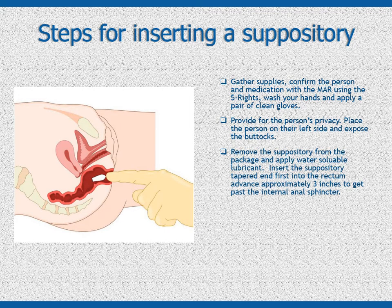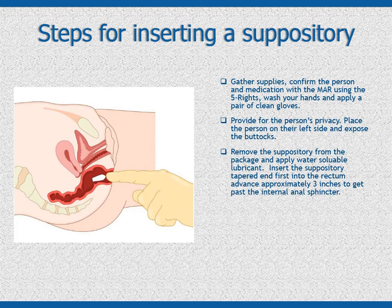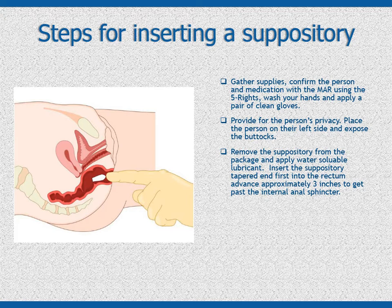Remove the suppository from its wrapper and apply a liberal amount of water-soluble lubricant to the tapered end. Using your non-dominant hand, lift the person's upper buttock to expose the anus. Have the person take several deep breaths and gently bear down like they are having a bowel movement. This will help relax the anal sphincter and reduce anxiety and discomfort during the insertion of the suppository.